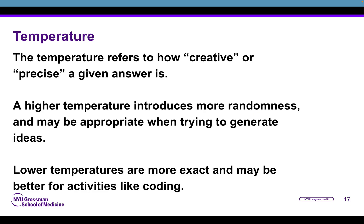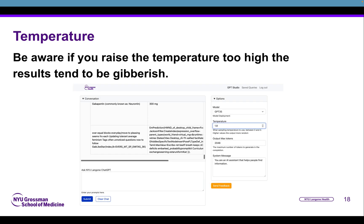The temperature setting refers to how creative or precise a given answer is. A higher temperature introduces more randomness, which may be more appropriate for cases such as generating new text or ideas where we want the AI to be more creative. A lower temperature is more exact and precise, and might be better for things like coding or where we're expecting a very precise response. It's worth noting that if you put the temperature too high, the results tend to be more or less gibberish.